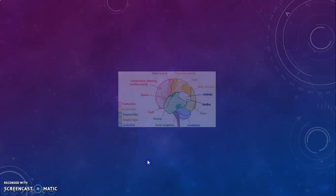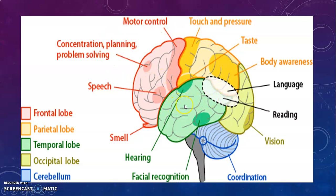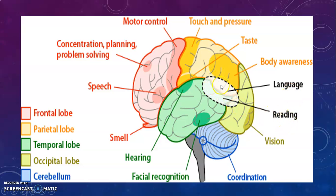The brain diagram shows different functions carried out by different regions. The frontal lobe controls speech, smell, concentrating, planning, problem solving, and motor control. The parietal lobe handles touch, pressure, taste, and body temperature. Language and reading are associated with the parietal lobe, temporal lobe, and the area between them. Hearing and facial recognition are carried out by the temporal lobe, and coordination of different body parts is carried out from the cerebrum.